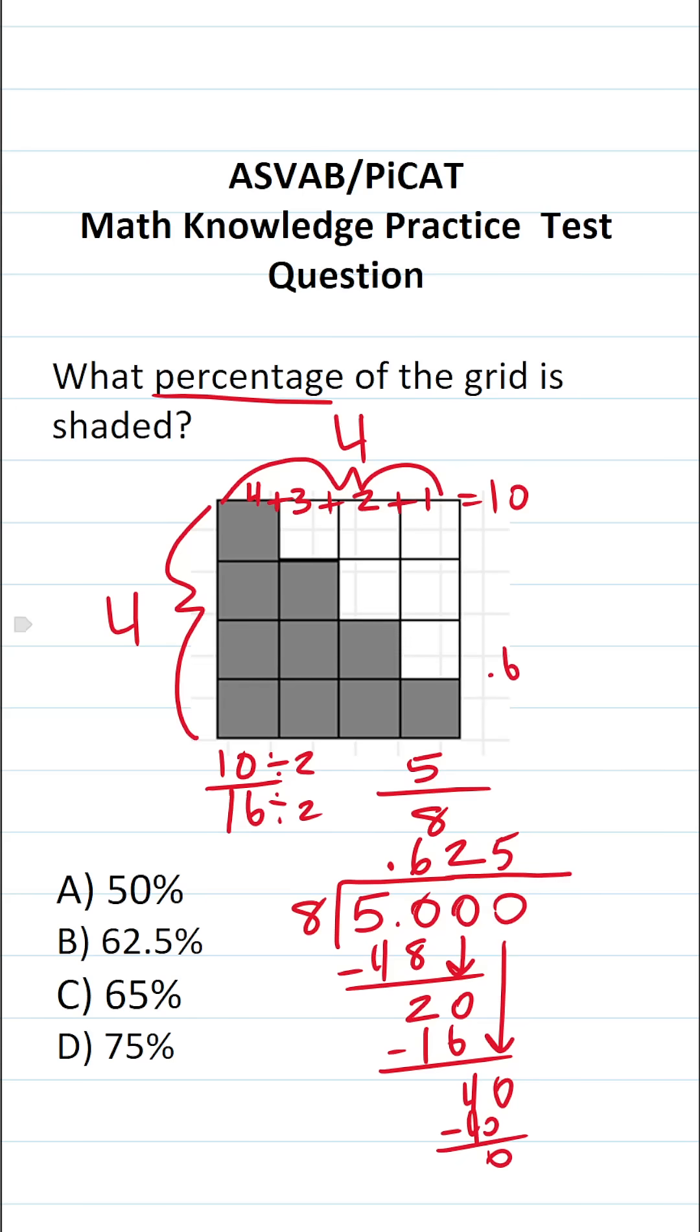To write 0.625 as a percent, all we do is move our decimal place 2 times. This becomes 62.5%. So what percentage of the grid is shaded? It's going to be B, 62.5%.